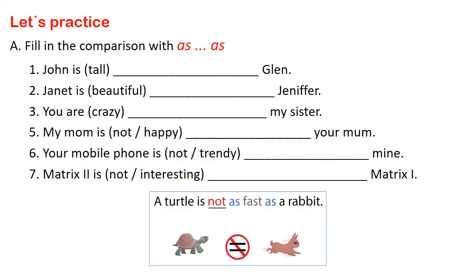Now let's practice. Fill in the comparison with as...as. Tenemos aquí algunas oraciones — tenemos seis: tres que nos servirán para hablar de similitudes y tres que nos servirán para hablar de diferencias. Para el video y hazlo por ti mismo. Tenemos que hacerlas de acuerdo al ejemplo que vemos. A turtle is not as fast as a rabbit. Una tortuga no es tan rápida como un conejo.